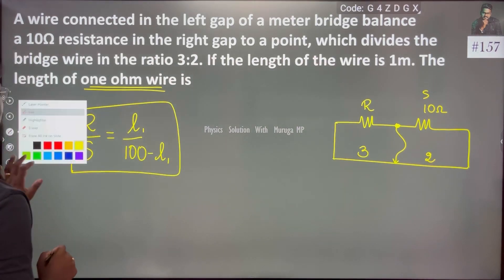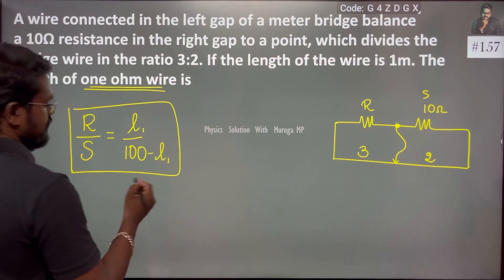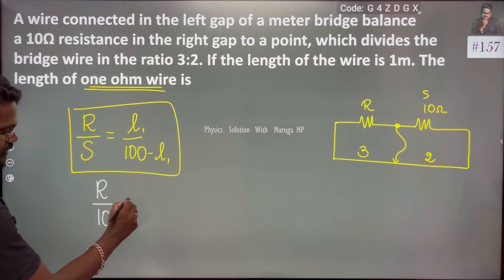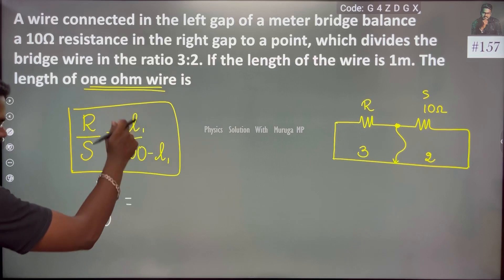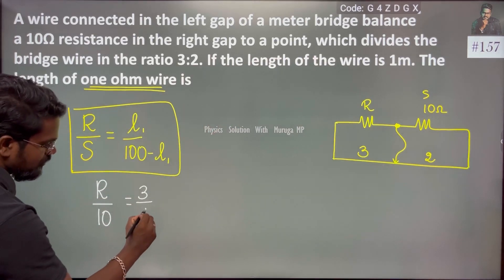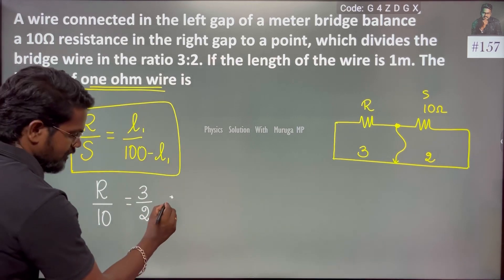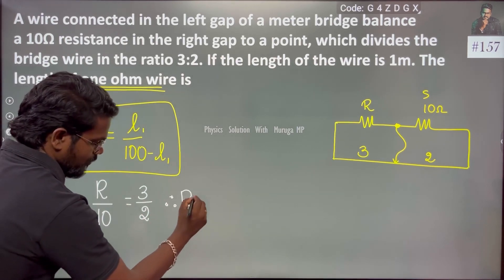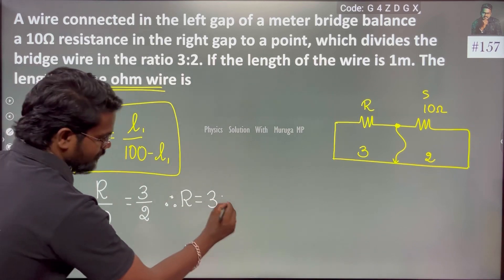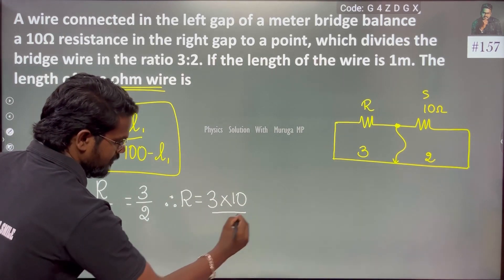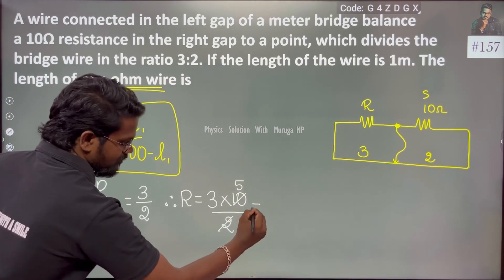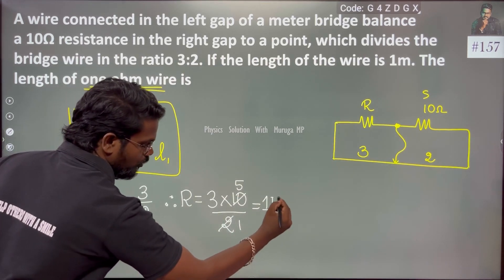Here we need to solve it. We know S is 10 ohm and the ratio is 3 by 2. So R by S equals 3 by 2. R is very easy — it is a simple multiplication. R equals 10 multiplied by 3 divided by 2, which is equal to 15 ohm.